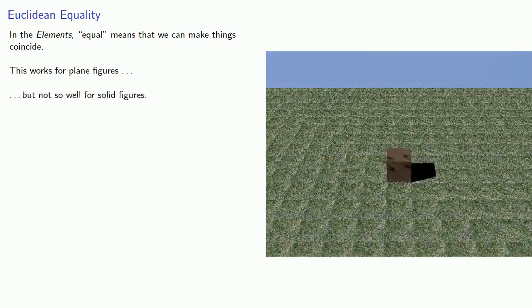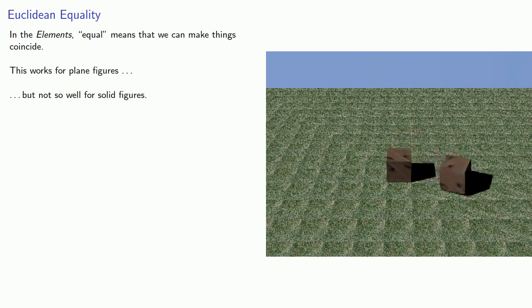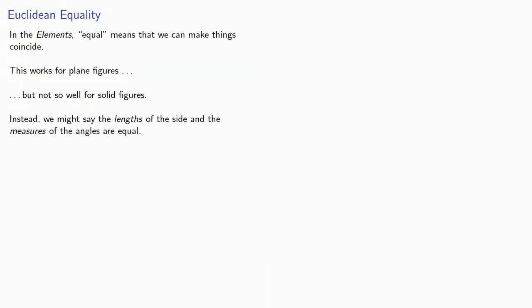And here we see an important distinction in Euclid. In the elements, equal means that we can make things coincide. And this works fine for plane figures. We can take a plane figure apart and make it coincide with another. But this doesn't work so well for solid figures. We can't make two identical solid figures coincide. And so instead, we might say things like the lengths of the sides and the measures of the angles are equal. And because the lengths and measures are not the sides or the angles themselves, we use the term congruent, and so we say that the sides and the angles are congruent.